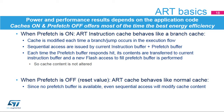If the prefetch buffer is disabled, the ART instruction cache behaves like a normal cache. Since no prefetch buffer is available, even a sequential access will modify the cache content. The power and performance trade-off must be evaluated for each application. For most applications, enabling the prefetch buffer slightly increases performance but with higher consumption. Generally, the best energy efficiency is achieved with caches enabled and the prefetch buffer disabled, as it often reduces the number of flash accesses.